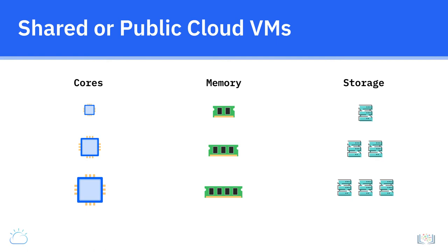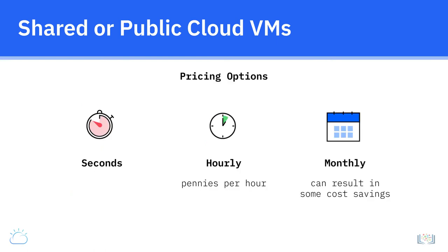Rather than pick from only predefined sizes, some providers also offer custom configurations that allow users to define the number of cores, RAM, and local storage characteristics. Public VMs are usually priced by the hour, or in some cases even seconds, and configurations start as low as pennies per hour. Some providers also let you get monthly VMs, which can result in cost savings if you know you will run the VM for at least a month, but if you decide to decommission the VM in the middle of the month, you will still be charged for the full month.